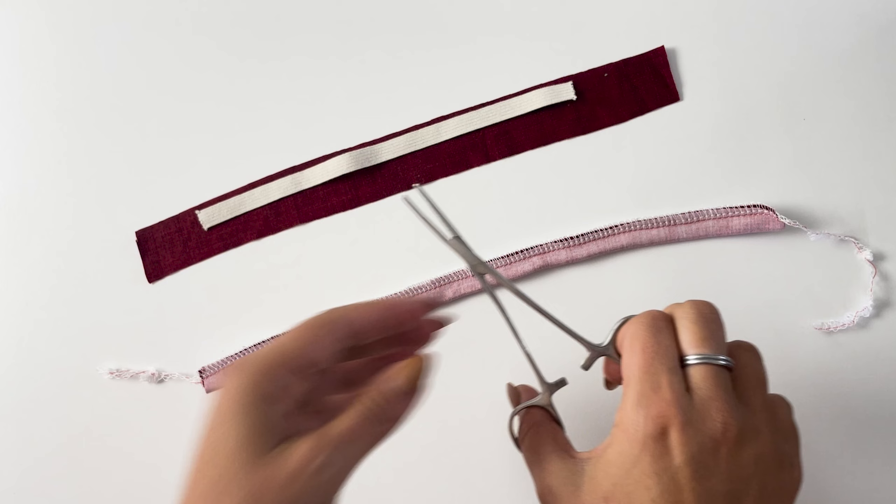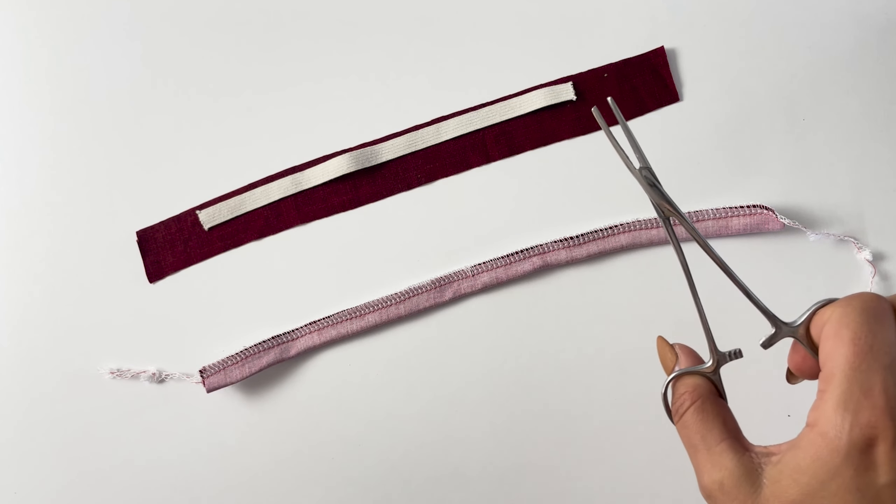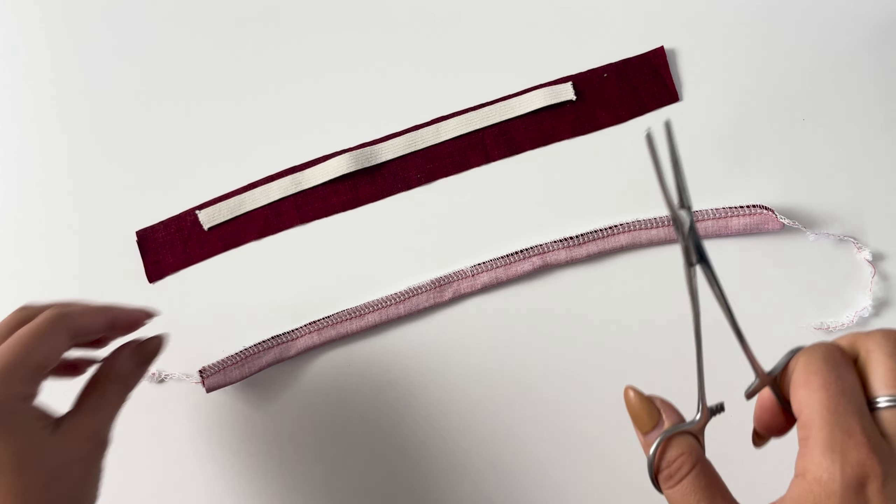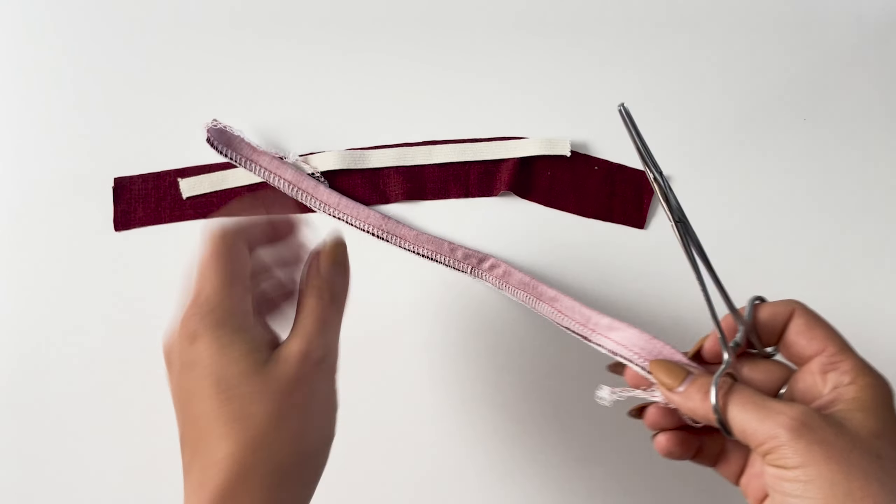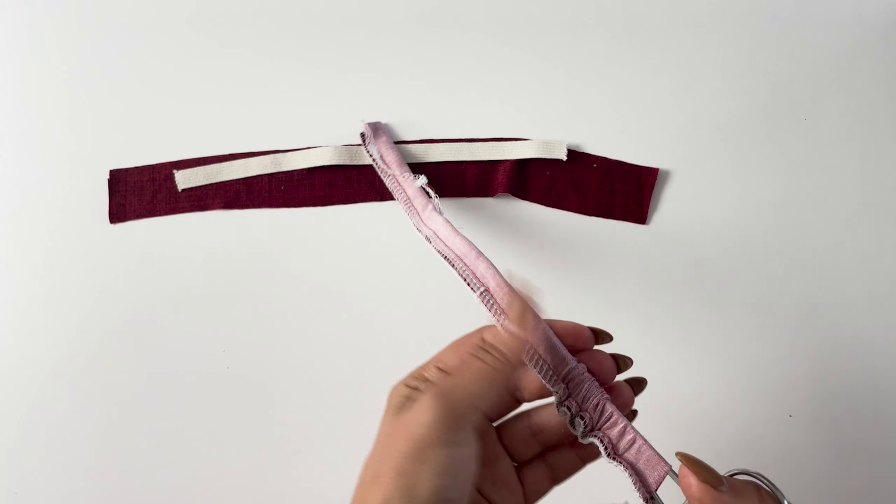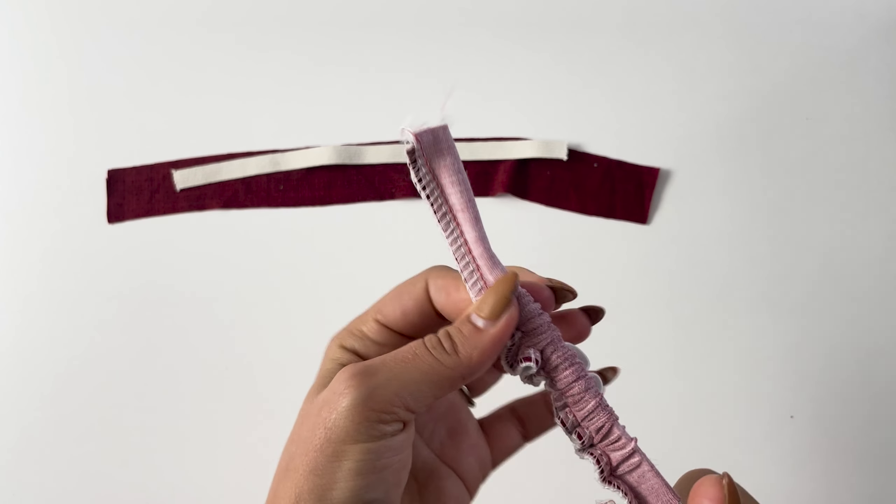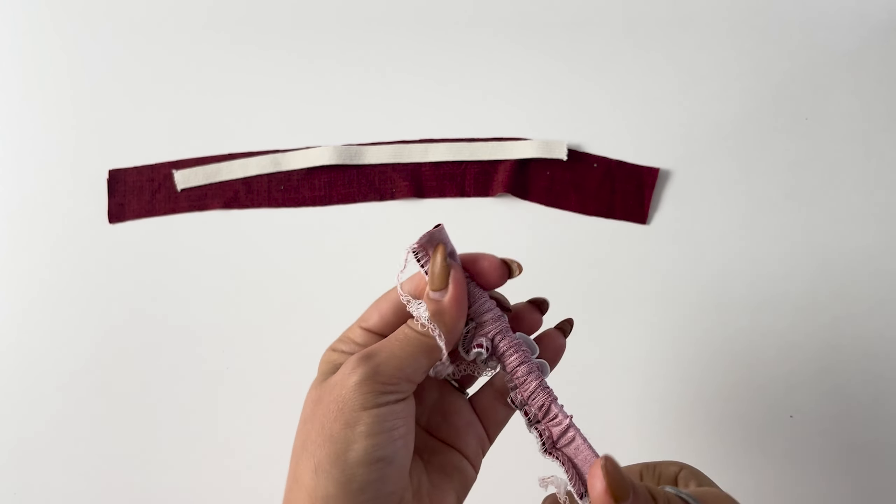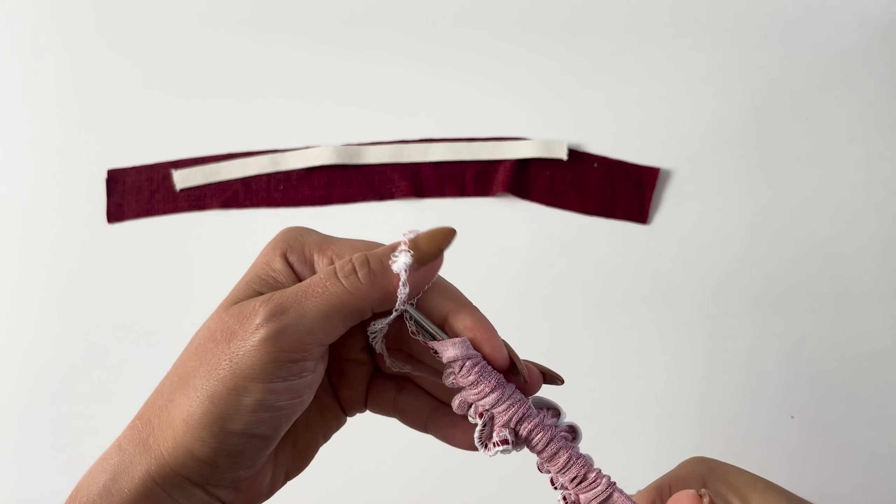But I understand that not everybody has this tool in their sewing room. This I think is actually a medical tool but it's one of my favorite tools for the sewing room. The way that I do this is I stick it in the opening all the way to the other end, open it up, stick the serger tail in, clamp it.